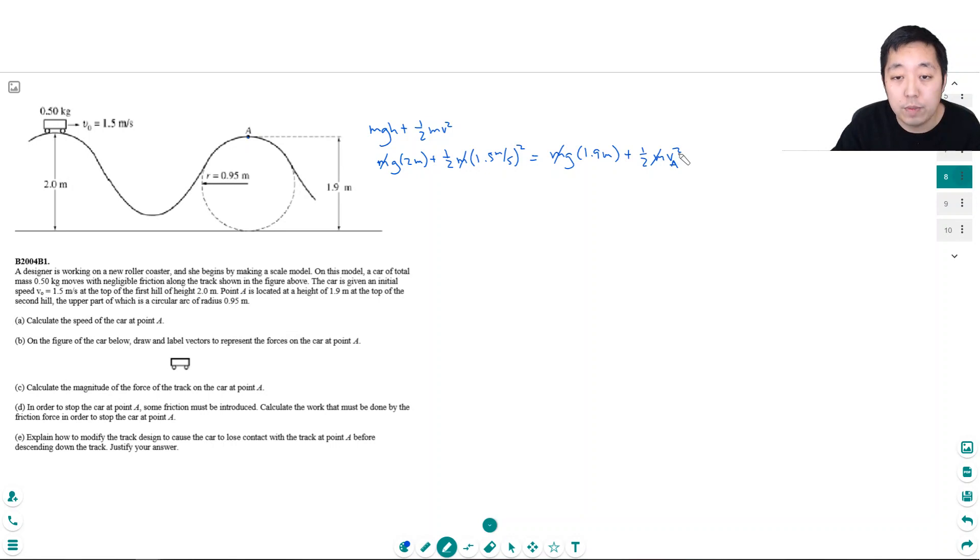So if I want to solve for vA squared, I'm going to bring this over to this side. So I have g times 2.0 meters plus one half times 1.5 meters per second squared minus g times 1.9 meters equals one half times vA squared.